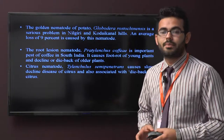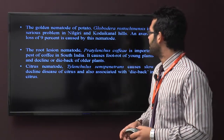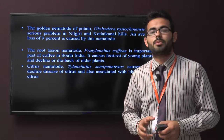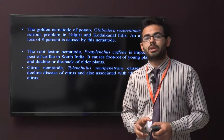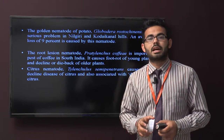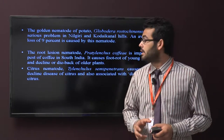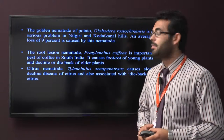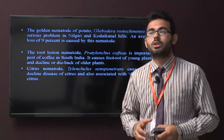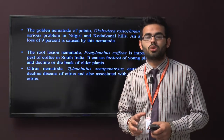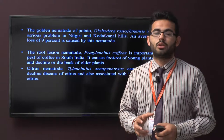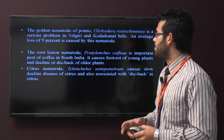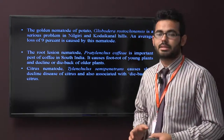The golden nematode of potato, Globodera rostochiensis, is a serious problem in Nilgiri and Kodaikanal hills. The root lesion nematode Pratylenchus coffeae is an important pest of coffee in South India. The citrus nematode Tylenchulus semipenetrans causes slow decline disease of citrus, associated with dieback in citrus.